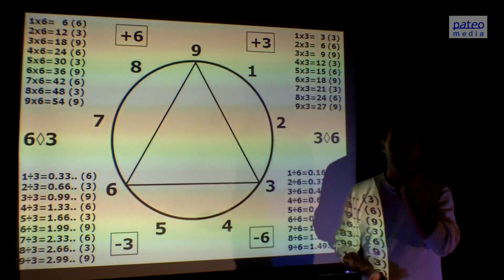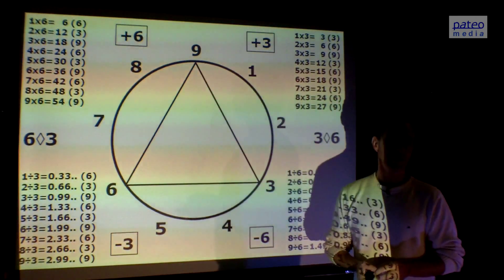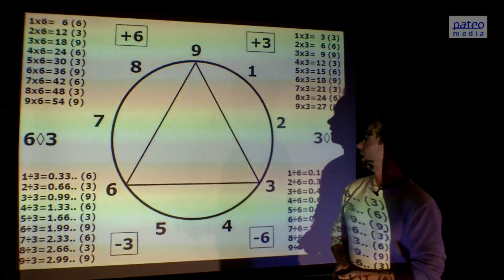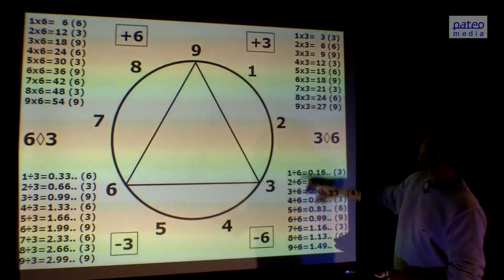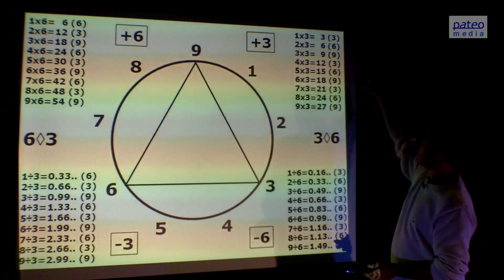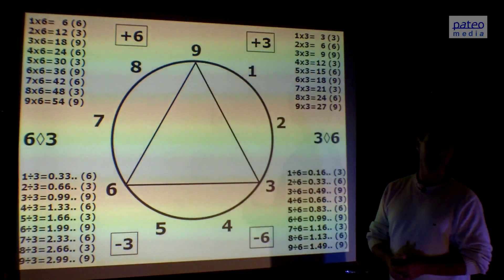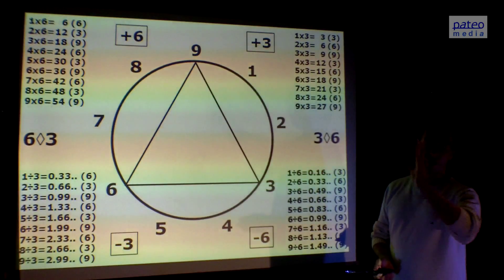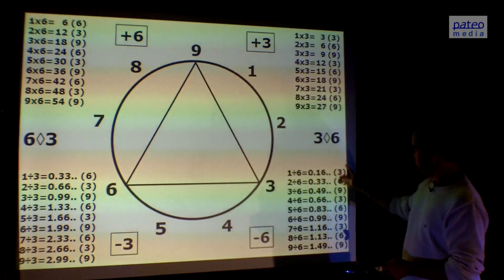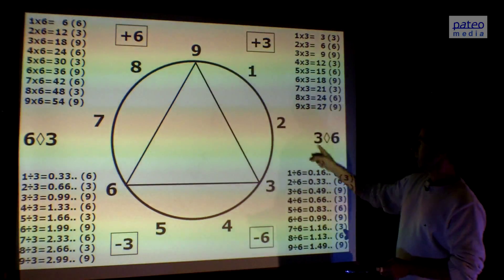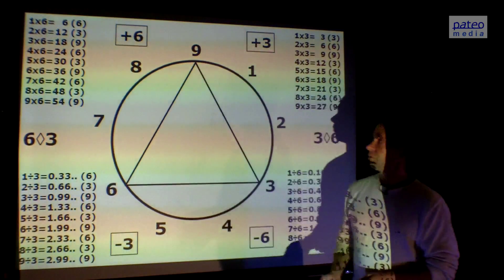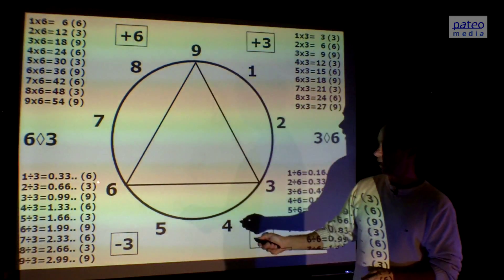Now let us look at the three numbers we have not discussed yet: three, six, and nine. Something happens when we look at the multiplication or division tables from three and six. This is the multiplication table of three and the outcome is only three, six, and nine. No other number appears. It doesn't matter how far we go, only three, six, and nine. The same happens when we divide by six, the same rhythm.